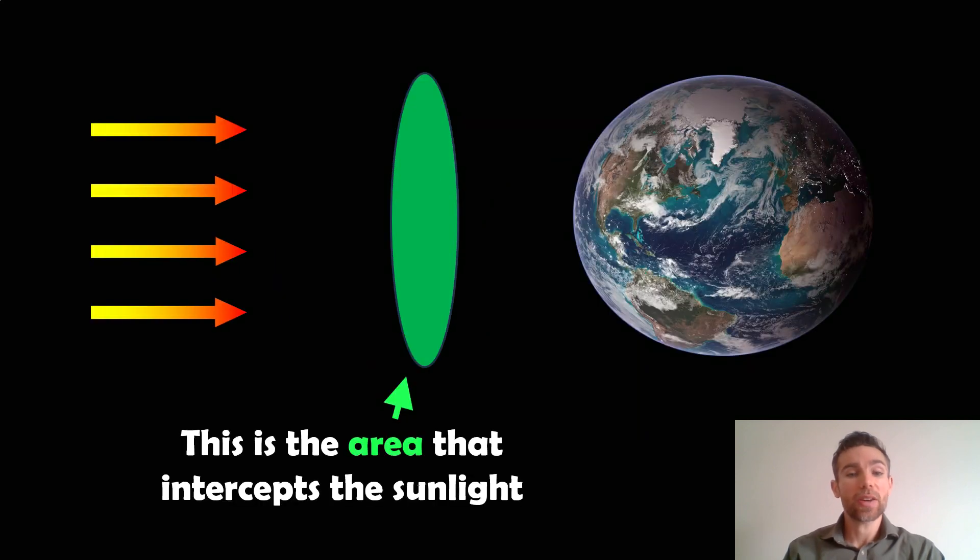So we've got the cross-sectional area. Just to give you a visual idea, this is the area that intercepts the sunlight. Depending on where it is from the Sun or the star, it's going to intercept different amounts of power. The closer it is, the higher the power density or energy density, because as you get further away it dissipates over a larger volume. This is the area that intercepts the sunlight.